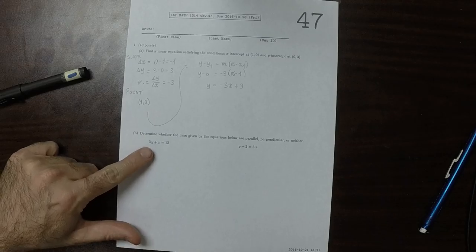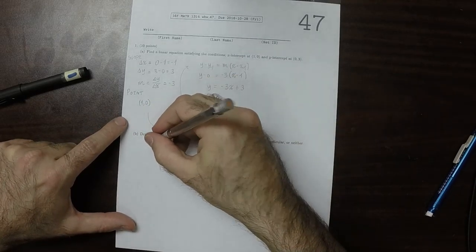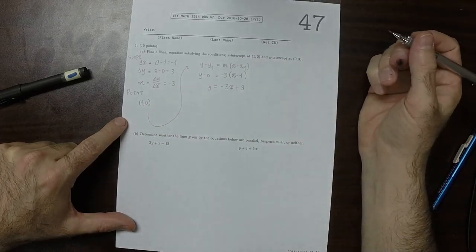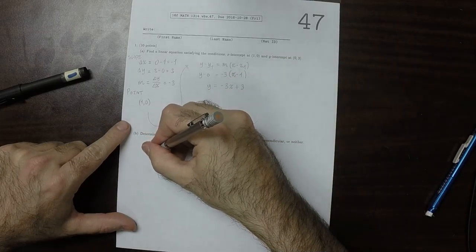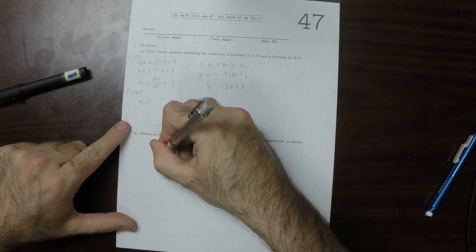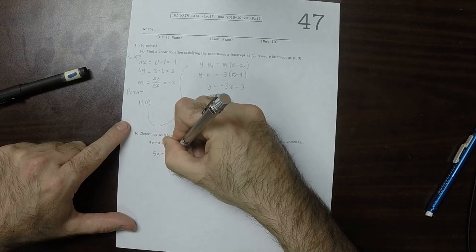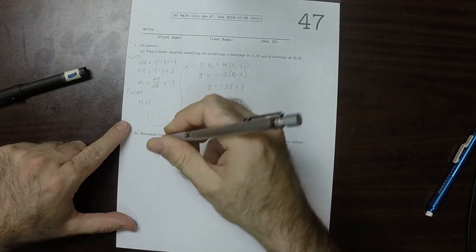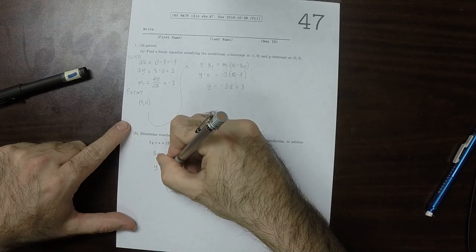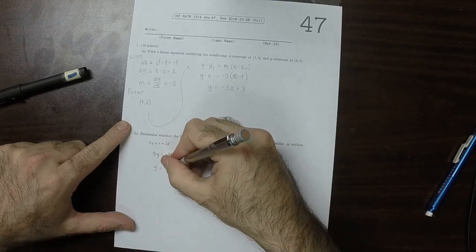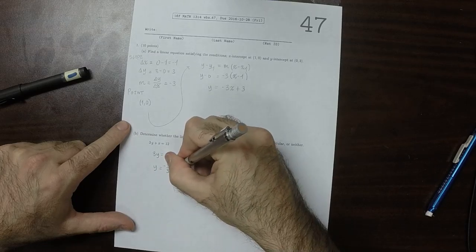For this one, I'll solve for y, and that will help me determine the slope of this line. So 3y is negative x plus 12. So y is negative 1 third x plus 4.